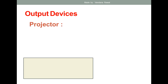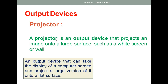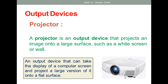The next output device is the projector. If you want to see images on a large surface such as a white screen or wall, a projector is used for that projection purpose. A projector is a type of output device that takes the display of a computer screen and projects a large version of it onto a flat surface, using lenses to focus onto the wide screen or wall.